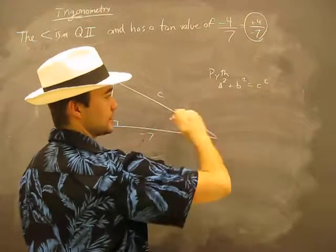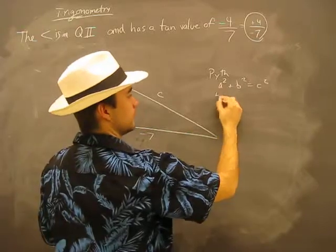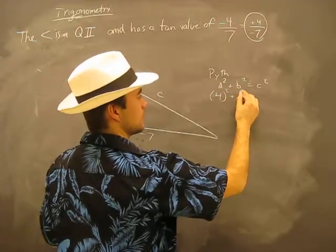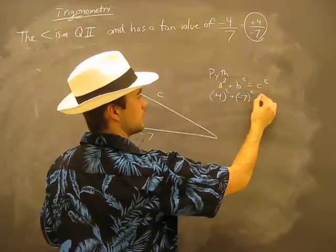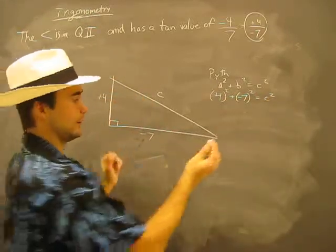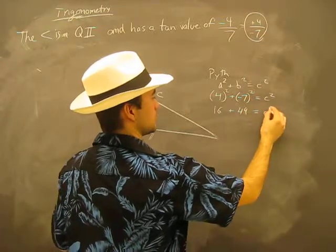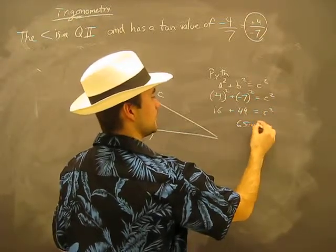Well, A and B. 4 squared plus negative 7 squared equals C squared. See, the negative will get rid of itself when it squares itself. So, 16 plus 49 equals C squared, so 65 equals C squared.